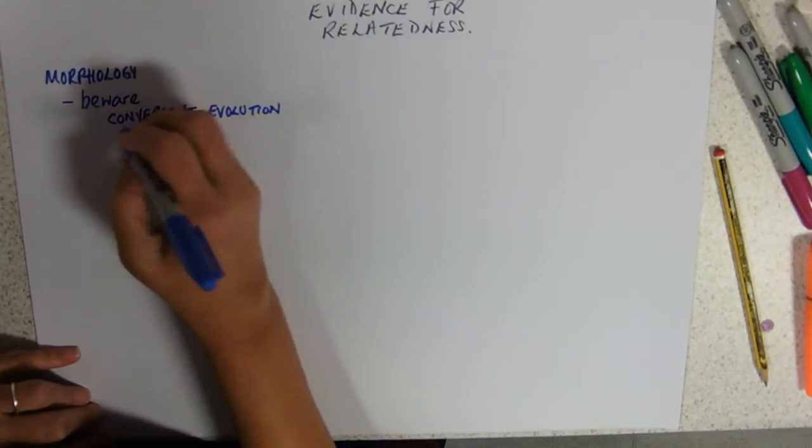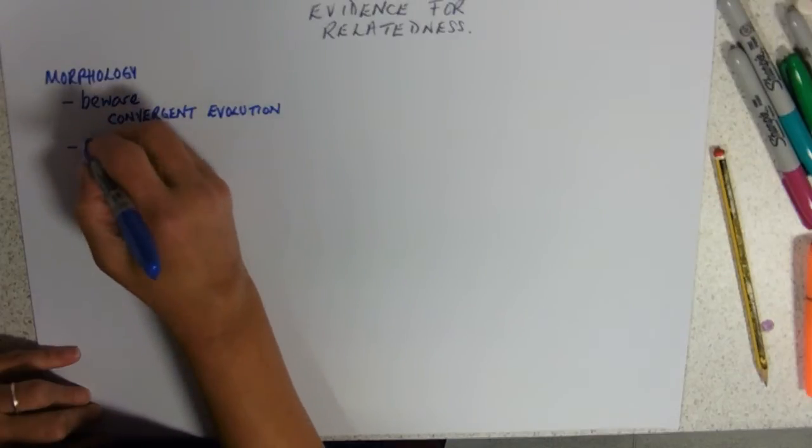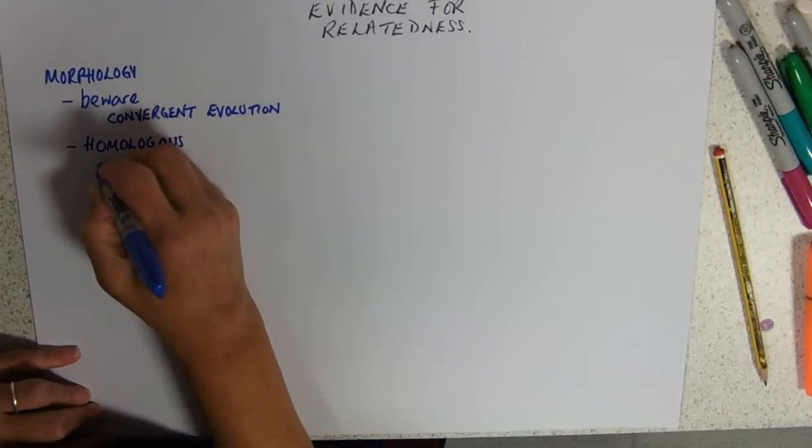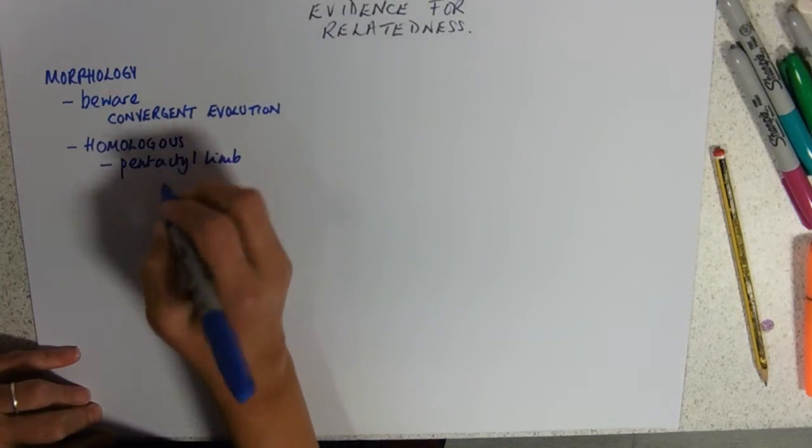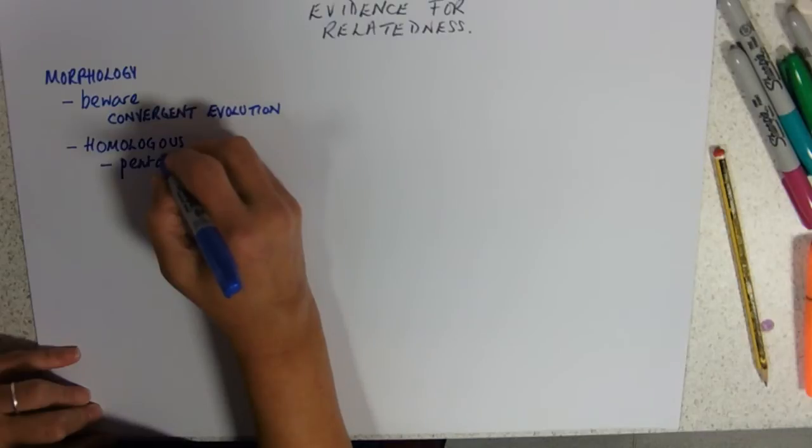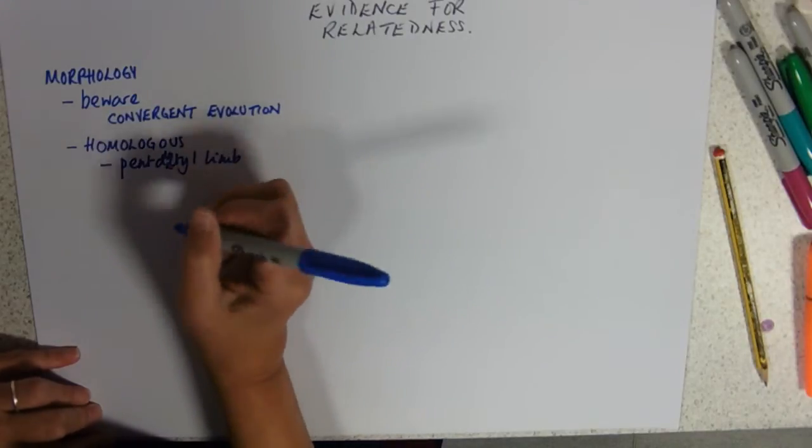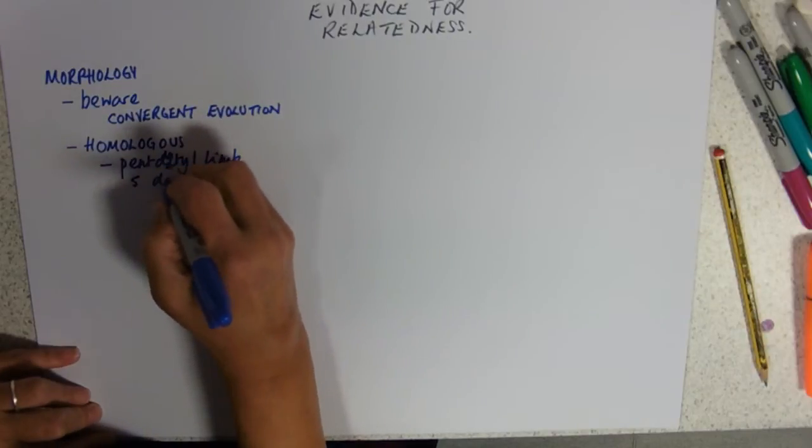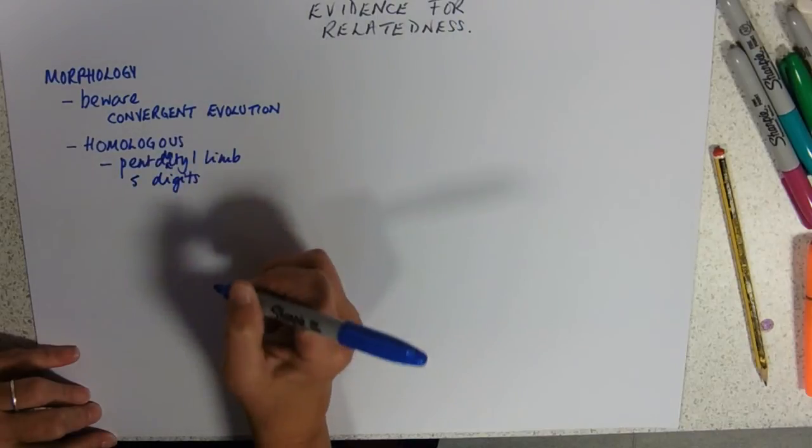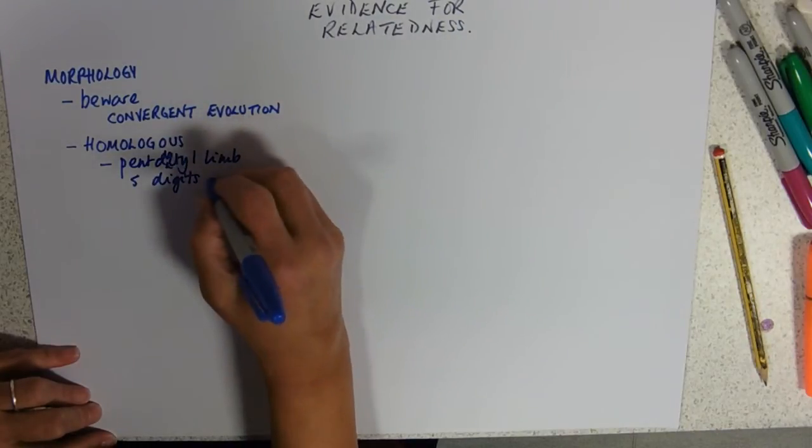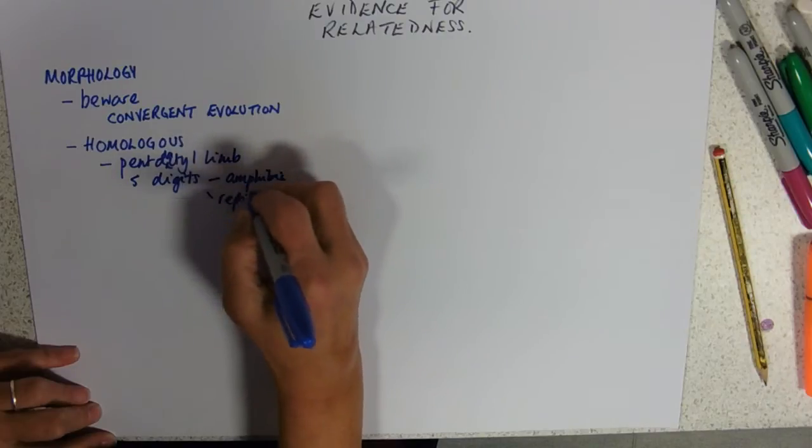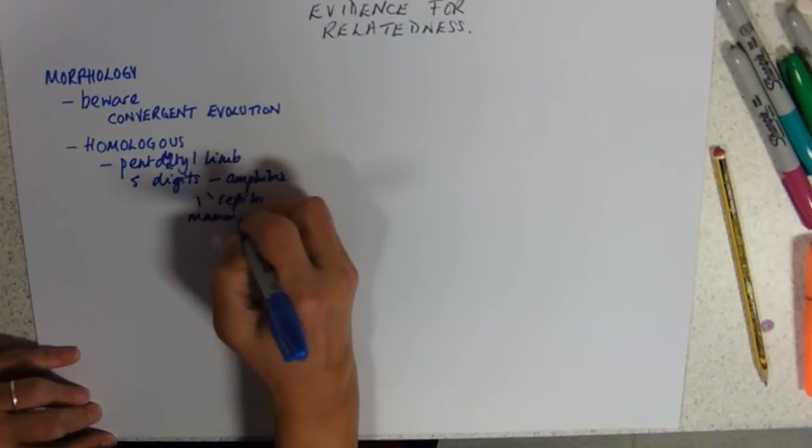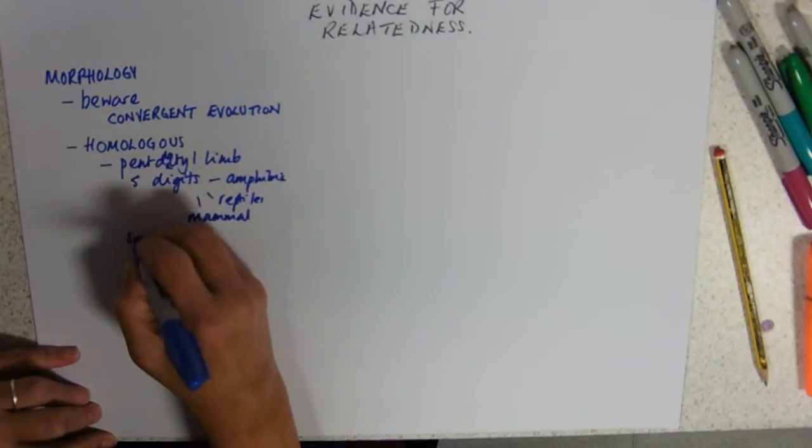We've also got that you need to know about homologous features. So a pentadactyl limb. Now in evolutionary terms, oh, can't spell pentadactyl. I've missed a DA out of it. Can't talk and spell at the same time. Pentadactyl limb. But what does that mean? Five digits. And pretty much that's quite widespread. So if you look at the groups that have got it in the chordates, we've got the amphibia, reptiles and mammals. And within that, we've pretty much got the same pattern.